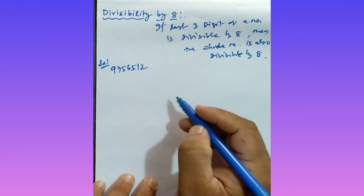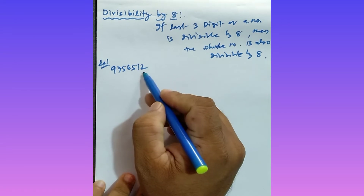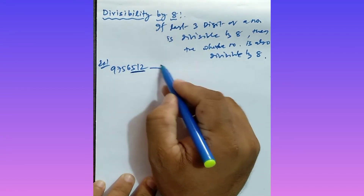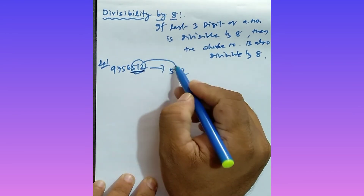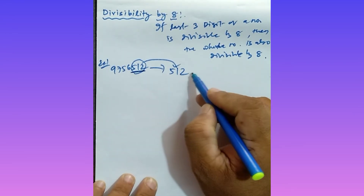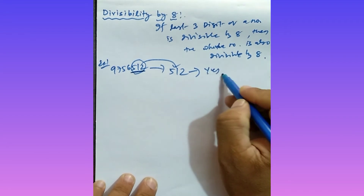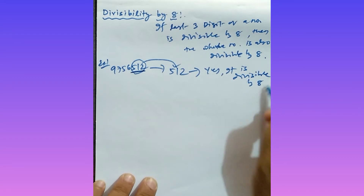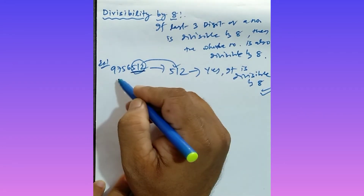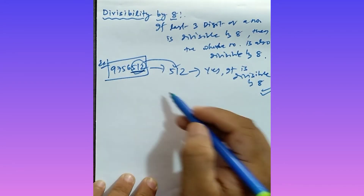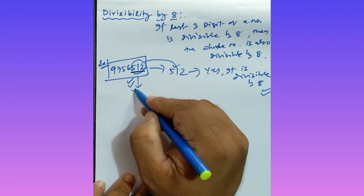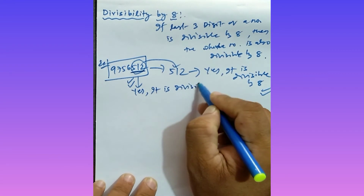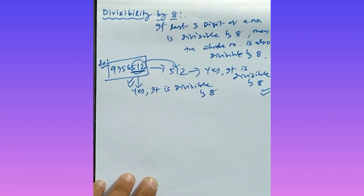Take this large number. Look at the last three digits — that is 512. Is 512 divisible by 8? Yes, it is divisible by 8. So the whole number is also divisible by 8.